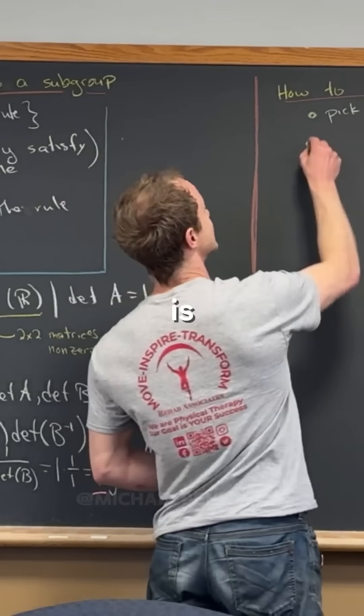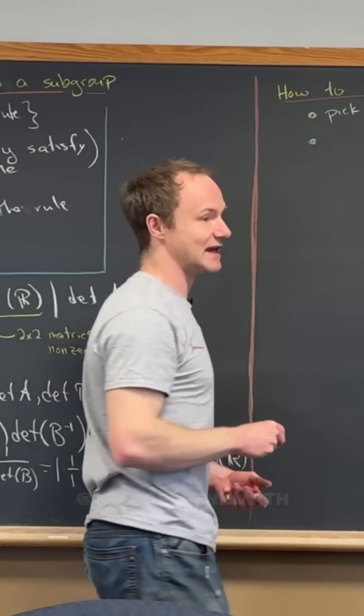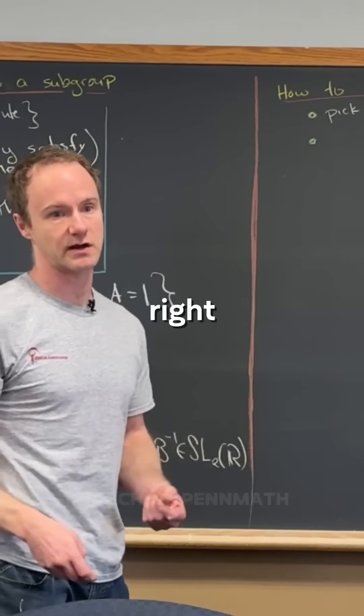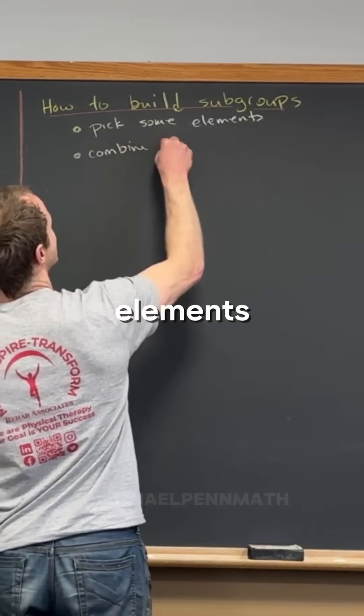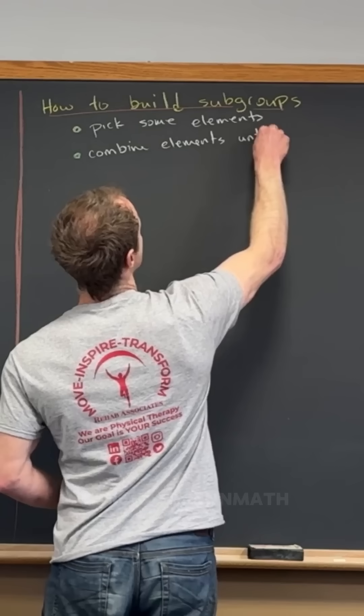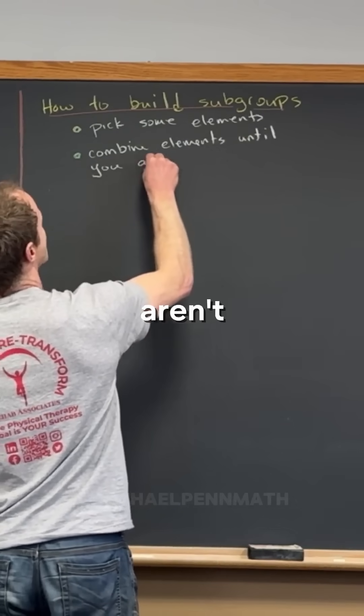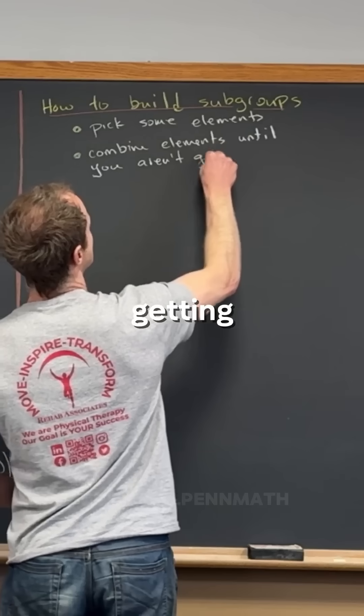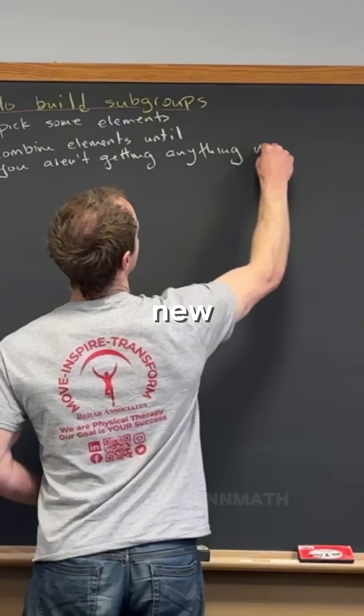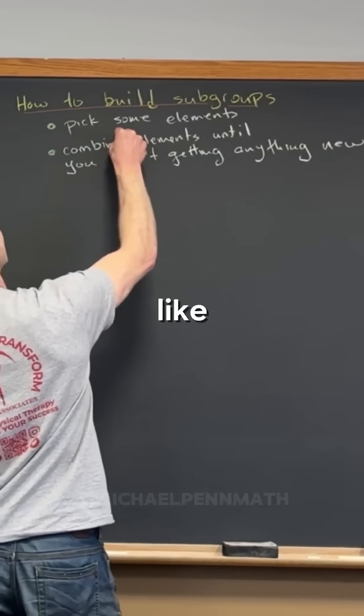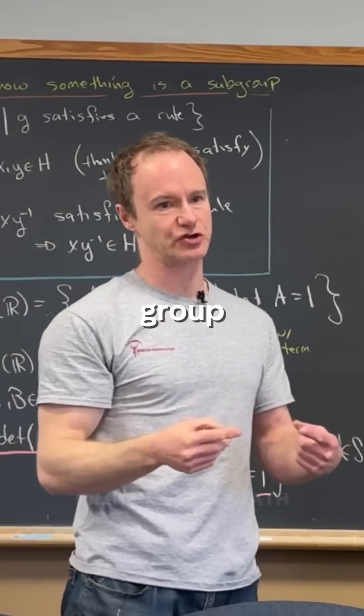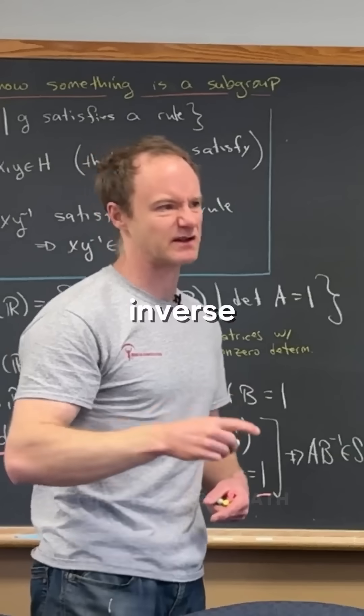Then what you want to do is start combining these elements with each other until you don't get anything new. So combine elements until you aren't getting anything new. I should maybe put combine with an asterisk there because I don't just mean combine with the group operation—you're also going to use the inverse too.